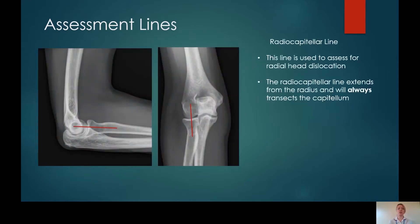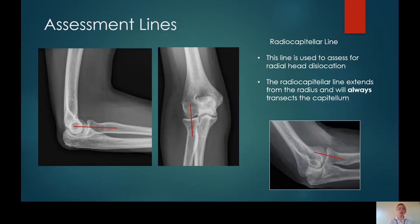The other assessment line that you need to be familiar with is the radial capitella line. This extends through the radial head and neck and bisects the capitellum. The radial capitella line always runs through both the radial head and the capitellum, no matter what projection has been acquired, as seen here in this oblique elbow as well. If the radial capitella line does not bisect both the capitellum and the radial head, you'll be looking at a radial head dislocation.